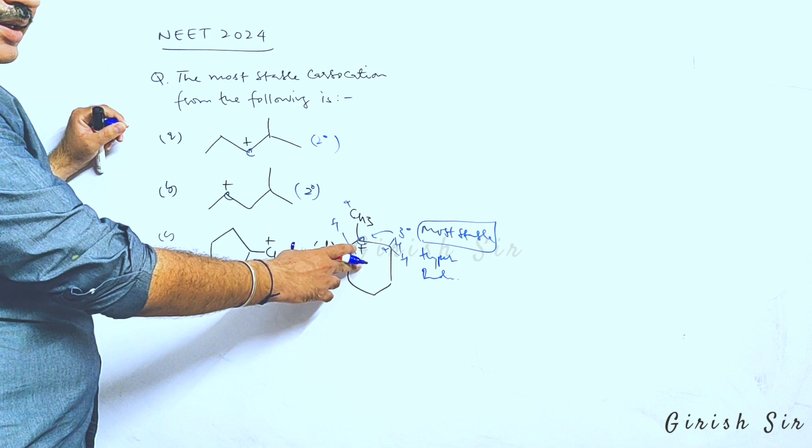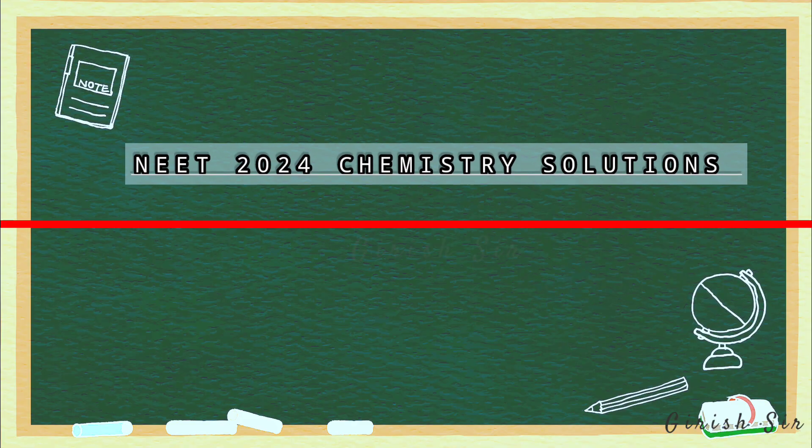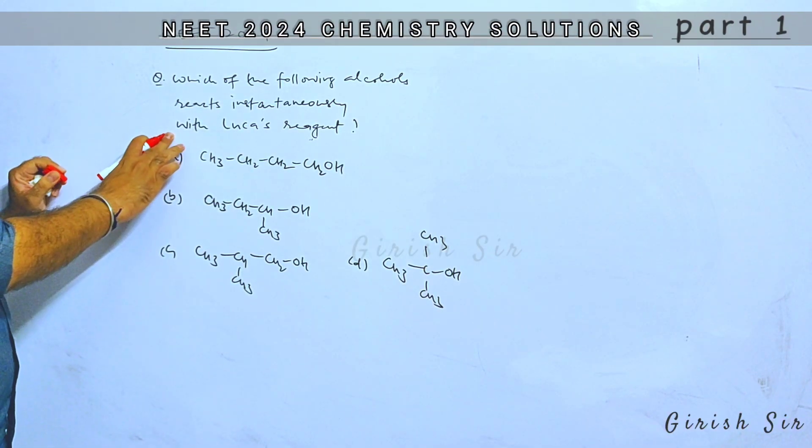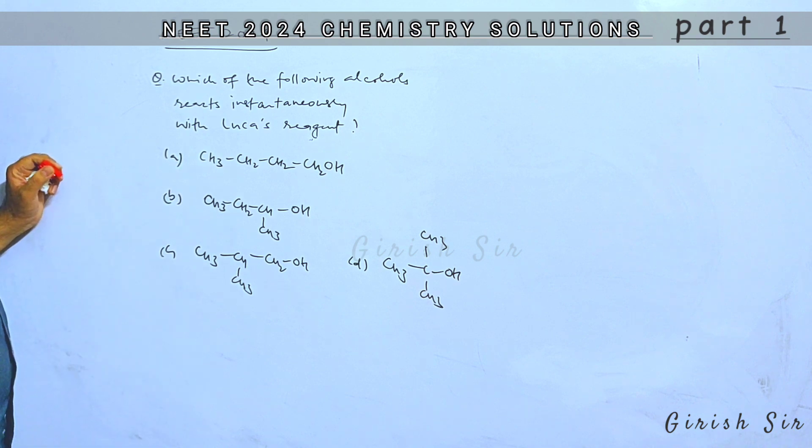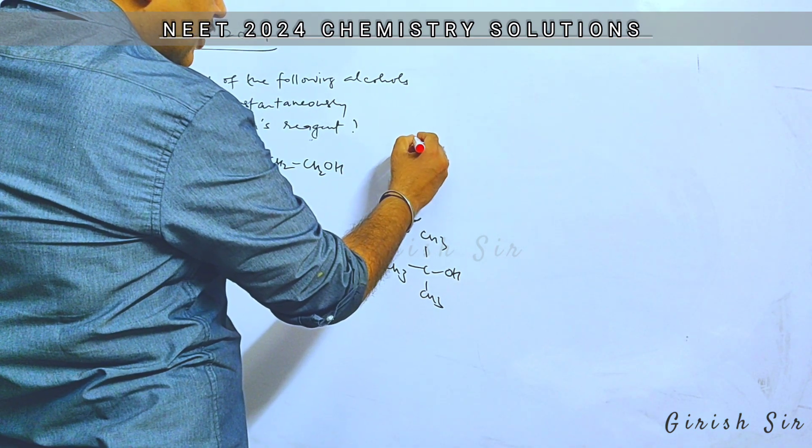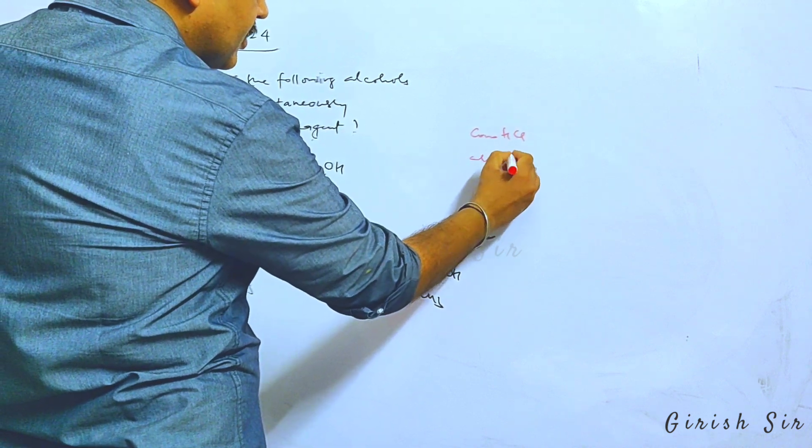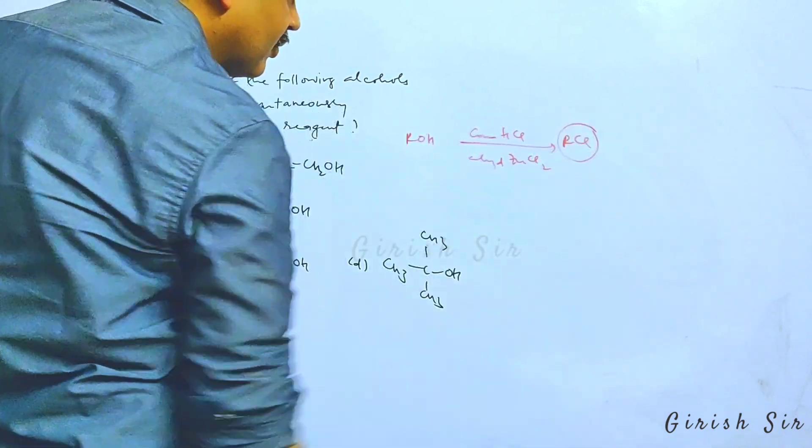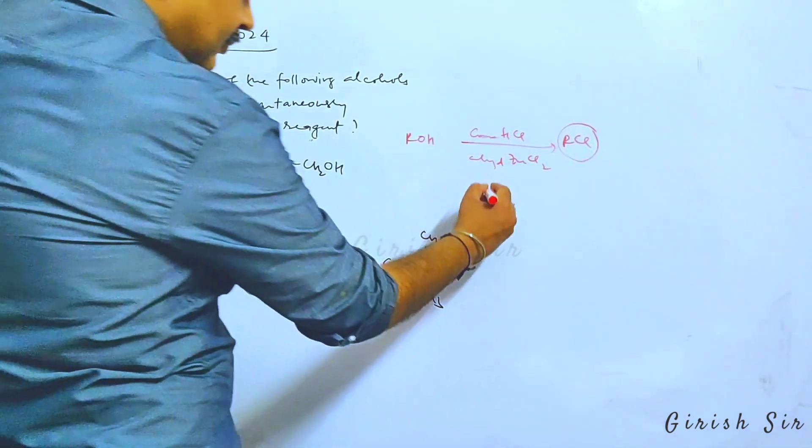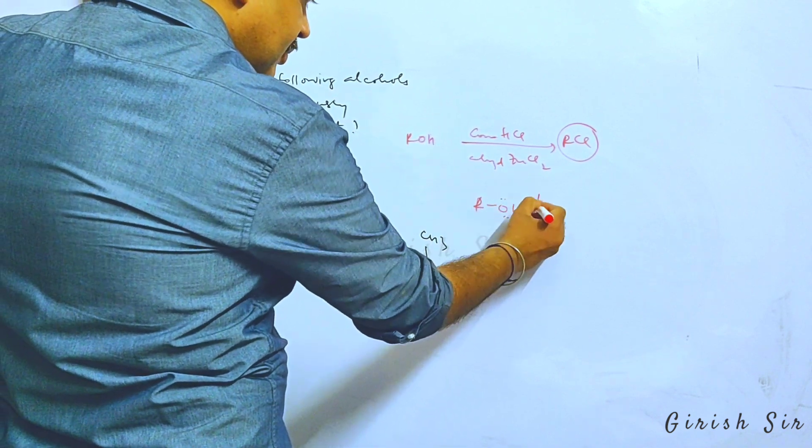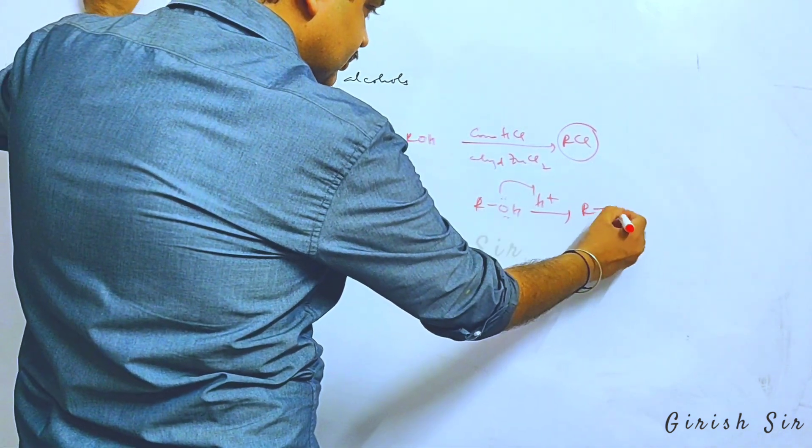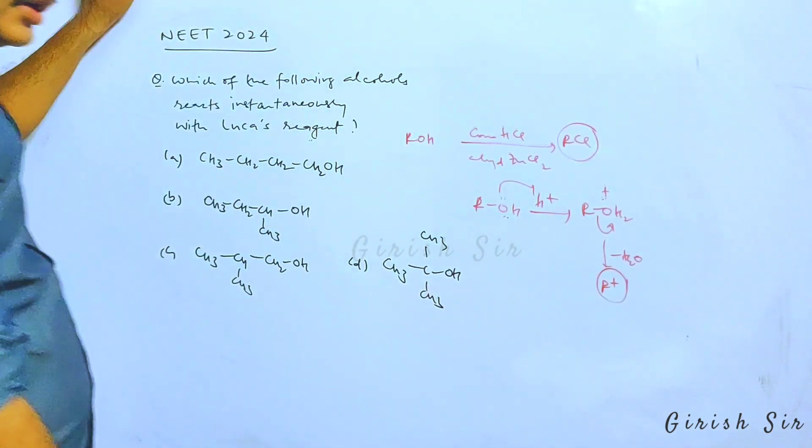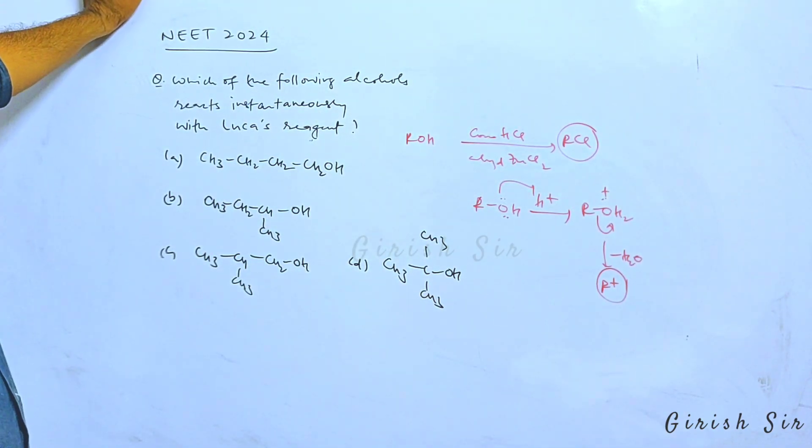In this question, we have to identify which alcohol will react instantaneously with Lucas reagent. If you know, Lucas reagent is a mixture of concentrated HCl and anhydrous zinc chloride. When alcohol is made to react with it, we get to see white turbidity due to formation of alkyl chloride.